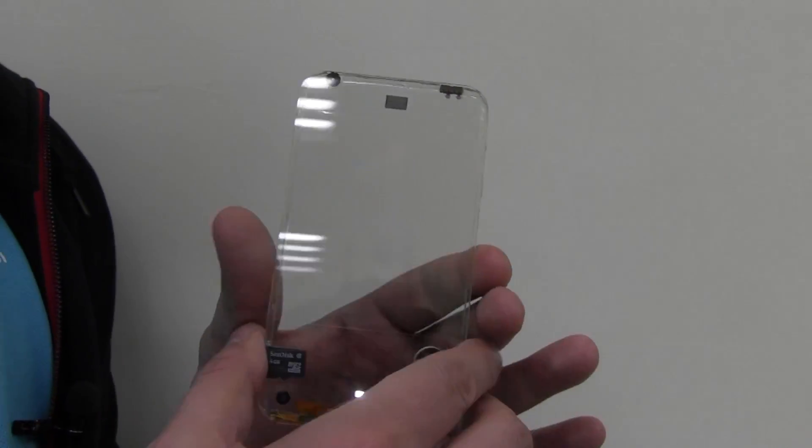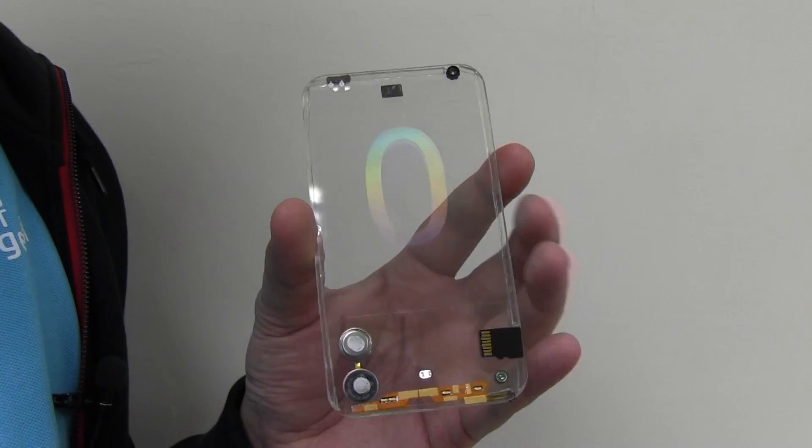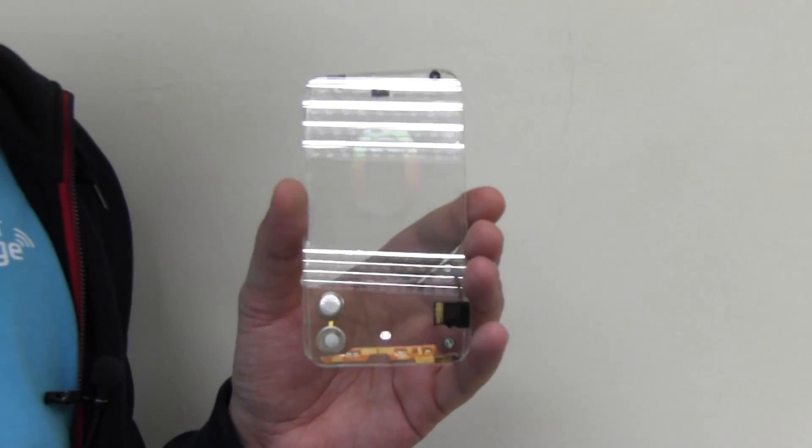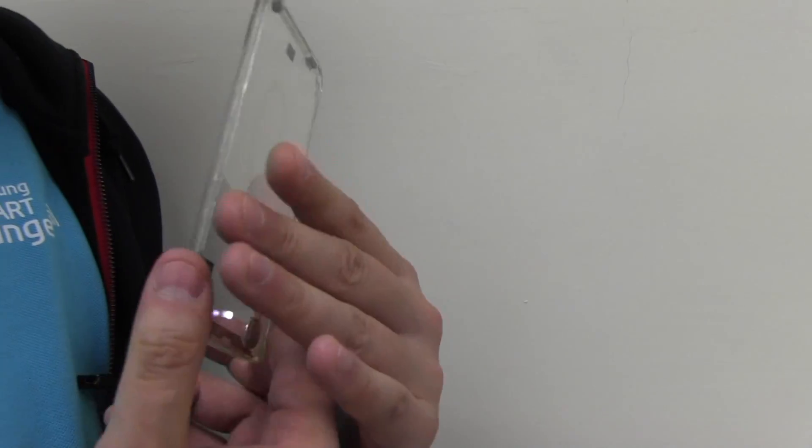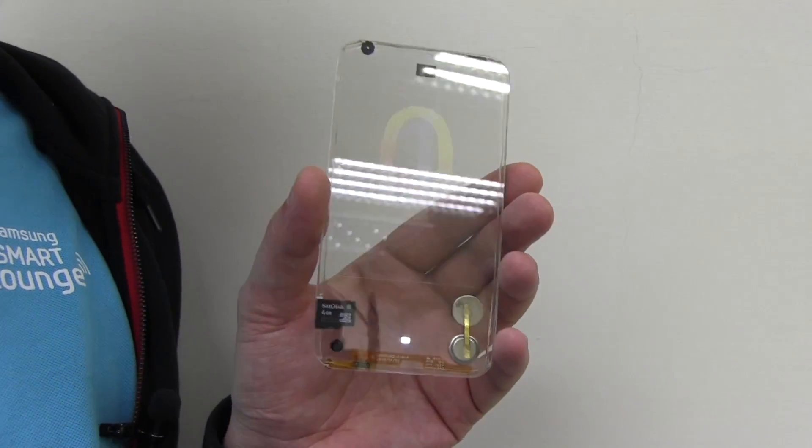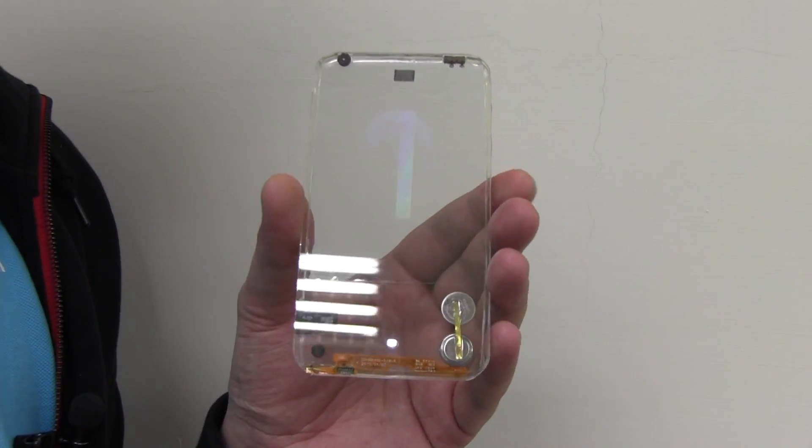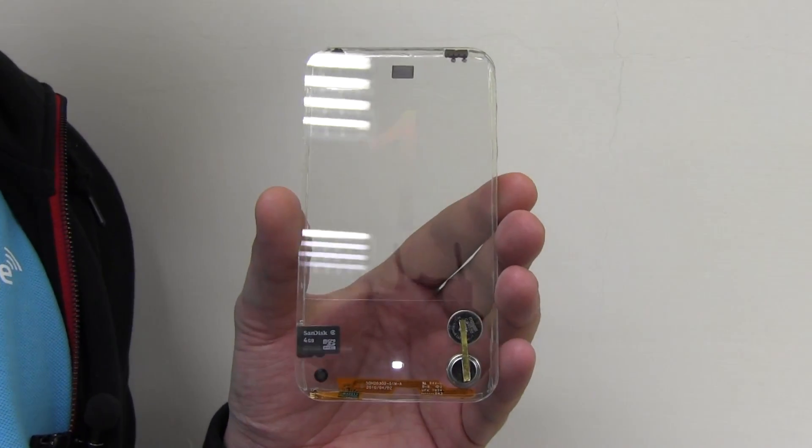So this is a very brief look at a super early stage technology demo and sample of a future transparent smartphone and this was made by Polytron Technologies in Taoyuan in Taiwan. I'm Sascha from Mobile Geeks. Thanks for watching.